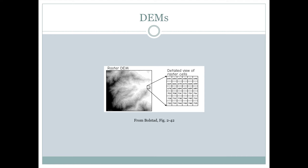On the left-hand side here, we can see an elevation map which has the highest elevations in white and the lowest elevations in black. And then if we just blow up on a few of those grid cells, we can see how the actual elevation is changing from one grid cell to another.